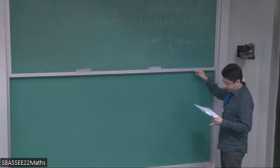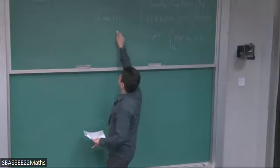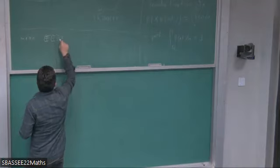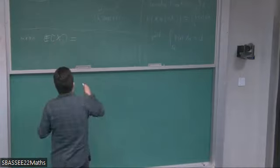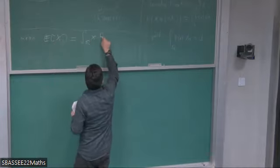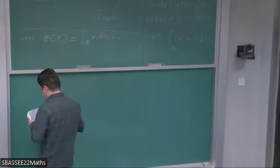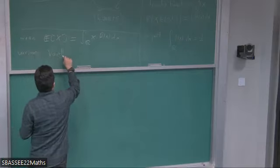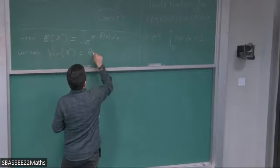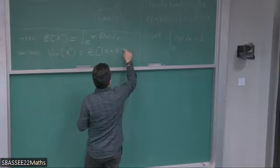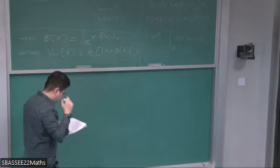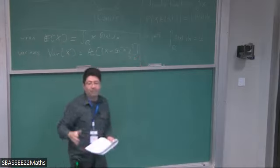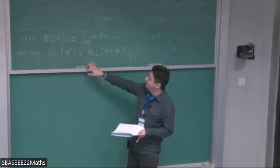These variables have an expected value or mean — the expectation of X — which is the integral over ℝ of x times f(x). I will also talk about the variance, which is the expectation of (X minus the expectation of X) squared, and will be non-negative. I hope this is familiar — mean and variance of random variables.